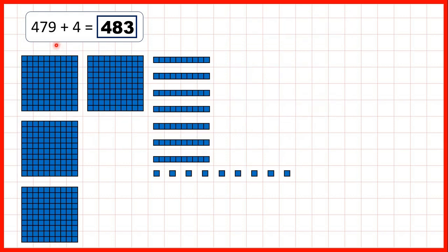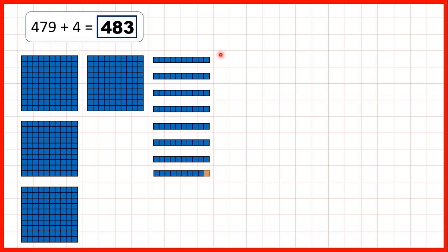Now let's take a closer look at these questions and show base 10 blocks so that we can understand what's happening. First, we had 479 — so there's four hundreds, seven tens, and nine ones — and we were adding four. First we can add one, and that means we have ten ones, so that gives us another ten. Then we just need to add three more ones, so that we've added four ones altogether, and that means we have four hundreds, eight tens, and three ones — so that's four hundred and eighty-three.